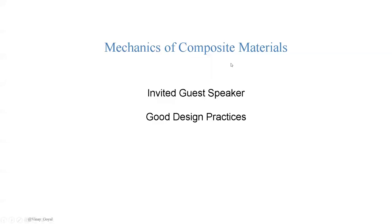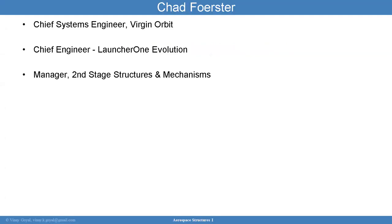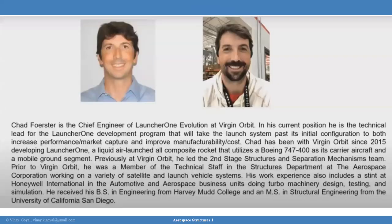Welcome to Mechanics of Composite Materials. Today I have invited a guest speaker that's going to talk to us about good design practices. I'm introducing you to Chad Forster, who is the Chief Systems Engineer at Virgin Orbit, previously the Chief Engineer for Launcher One Evolution, and he used to be the manager of second-stage structures and mechanisms and has extensive experience in structural systems and design.